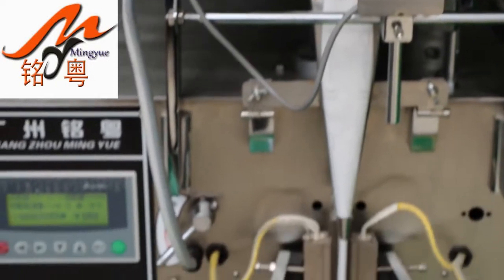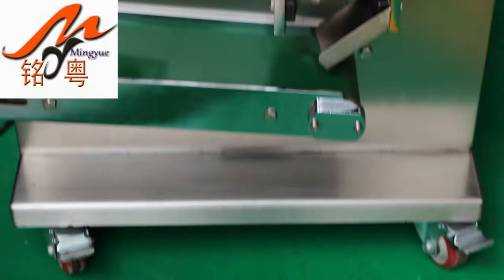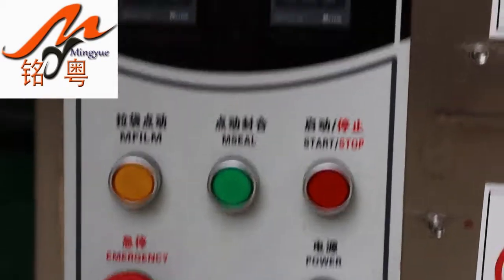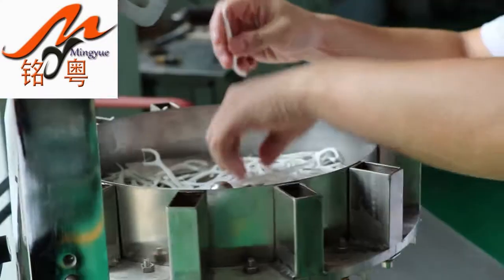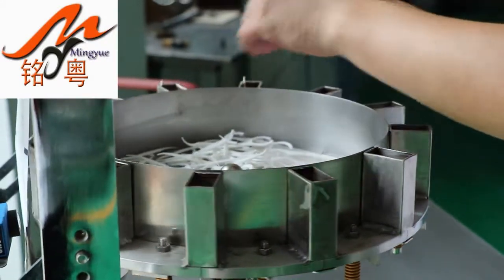Guangzhou Mingyue Packaging Machinery Company Ltd. is a private enterprise which is mainly engaged in the research and development, design, manufacture, and sale of packaging machines with tablet presses and other equipment.